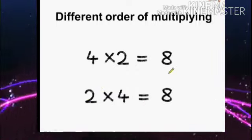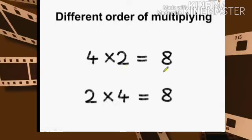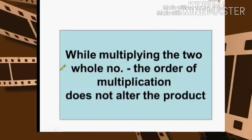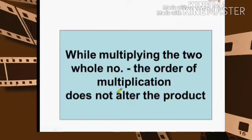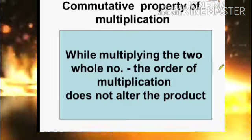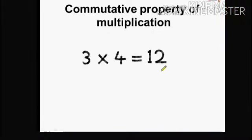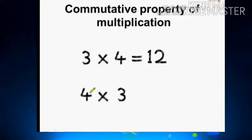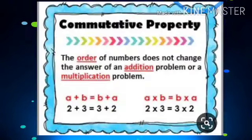This is the commutative property of multiplication: when we multiply two whole numbers, the order of multiplication does not alter the product. For example, 3 into 4 is equal to 12, and 4 into 3 is also equal to 12. The order of multiplication does not change the product.